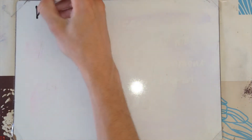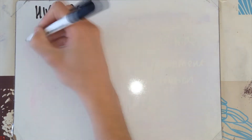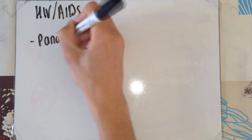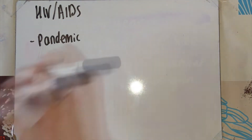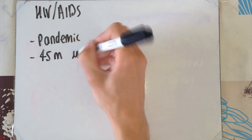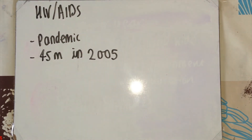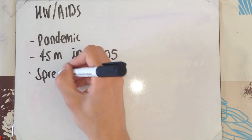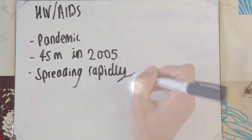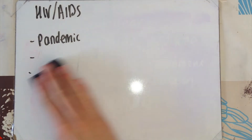HIV and AIDS is a worldwide pandemic spreading rapidly. At the end of 2005, there were 45 million people affected. It's most common in sub-Saharan Africa, where there are inadequate health services and a lack of money for proper treatment.